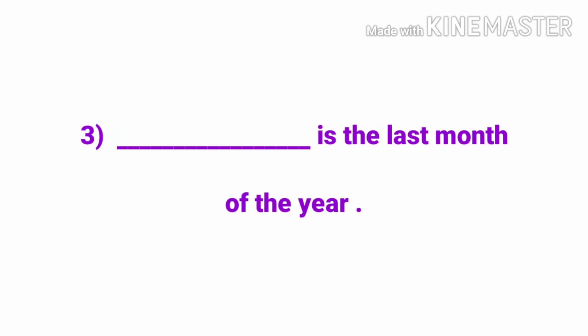Number three: dash is the last month of the year. It is very easy.